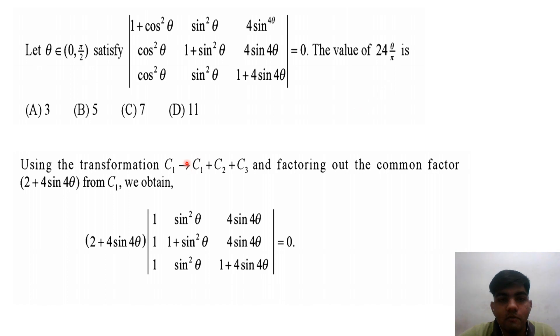First, we perform a column operation. Adding column 1 plus column 2 plus column 3, using cos⁴θ + sin²θ = 1 and the 4sin⁴θ term.